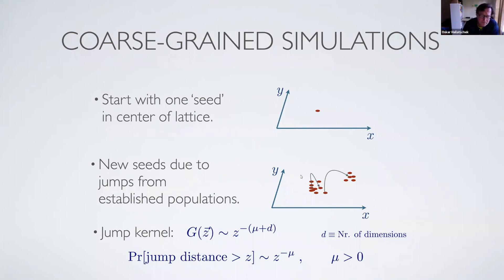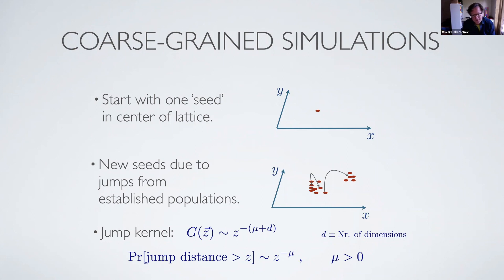For concreteness, I fix the jump kernel to a power-law form: the probability that the jump distance is larger than z decays like z to the power of minus mu. One reason is to be concrete and classify behaviors, and the second reason is that we've seen the dollar-bill data has a power-law kernel. Here d is the number of dimensions, and mu is a parameter that must be larger than zero for this to be normalizable.